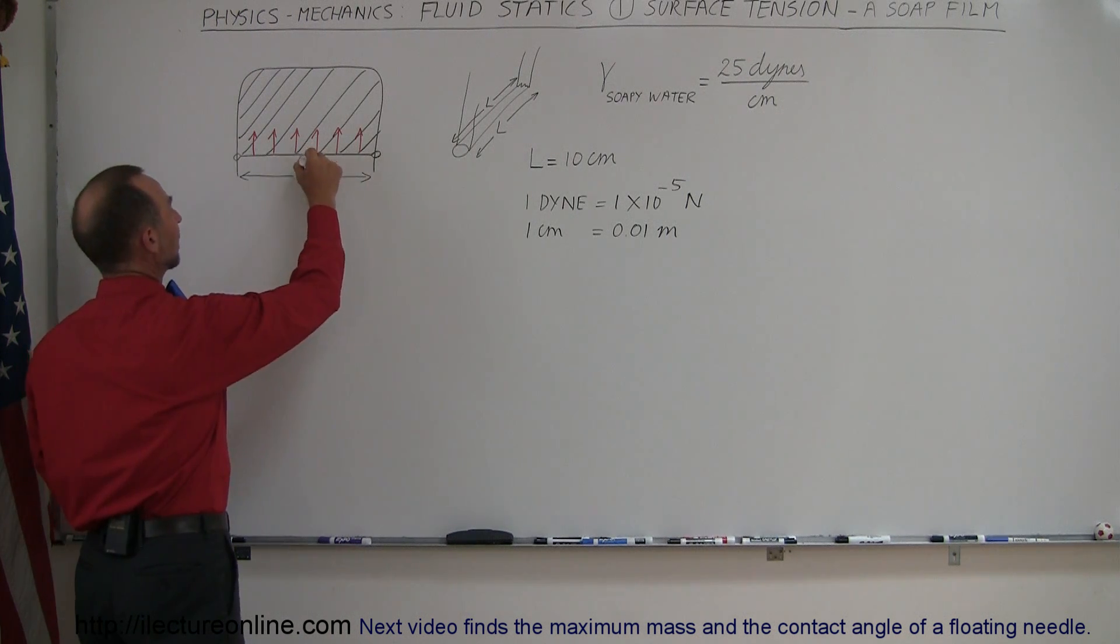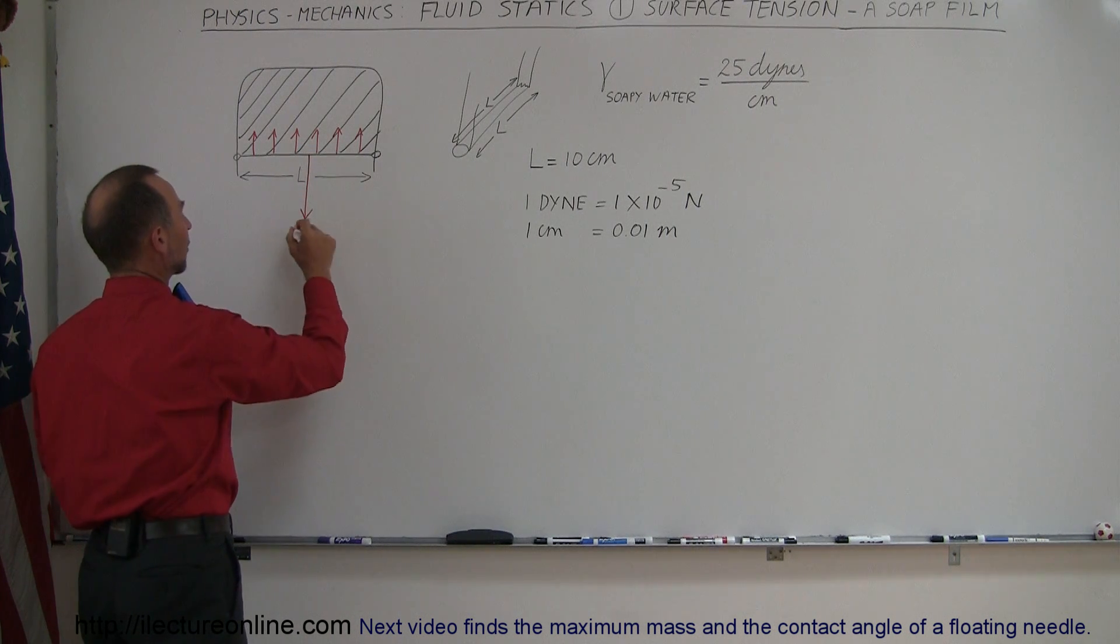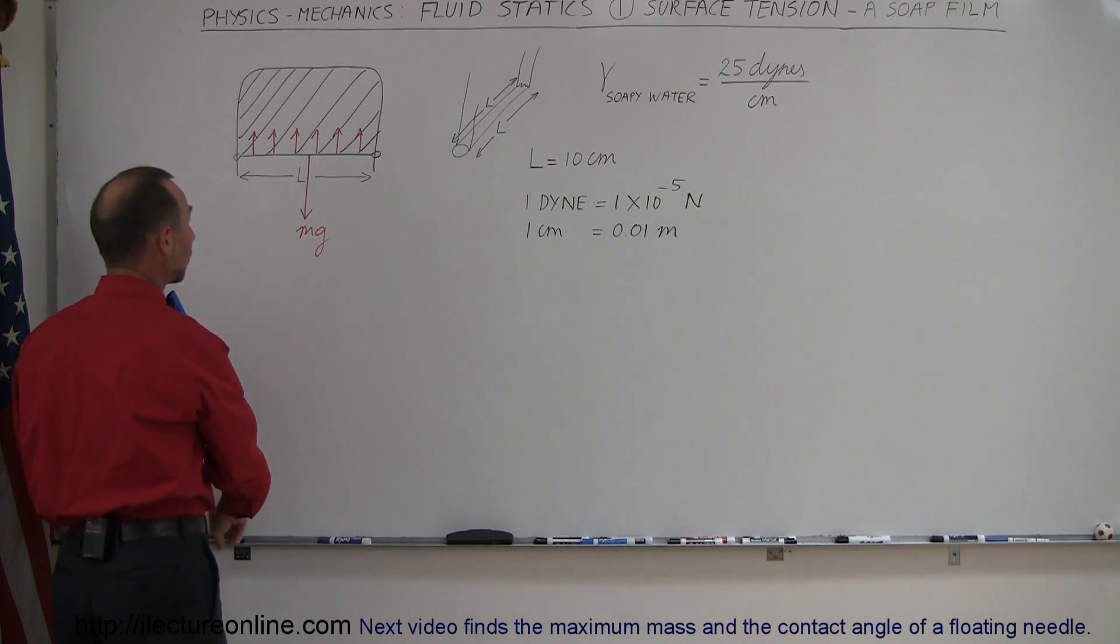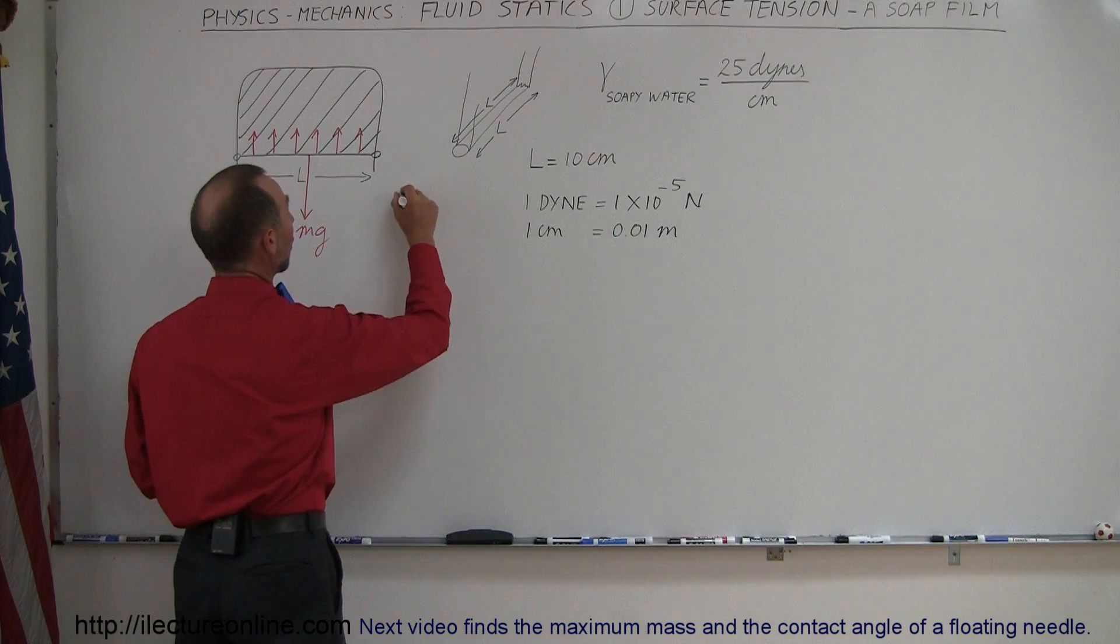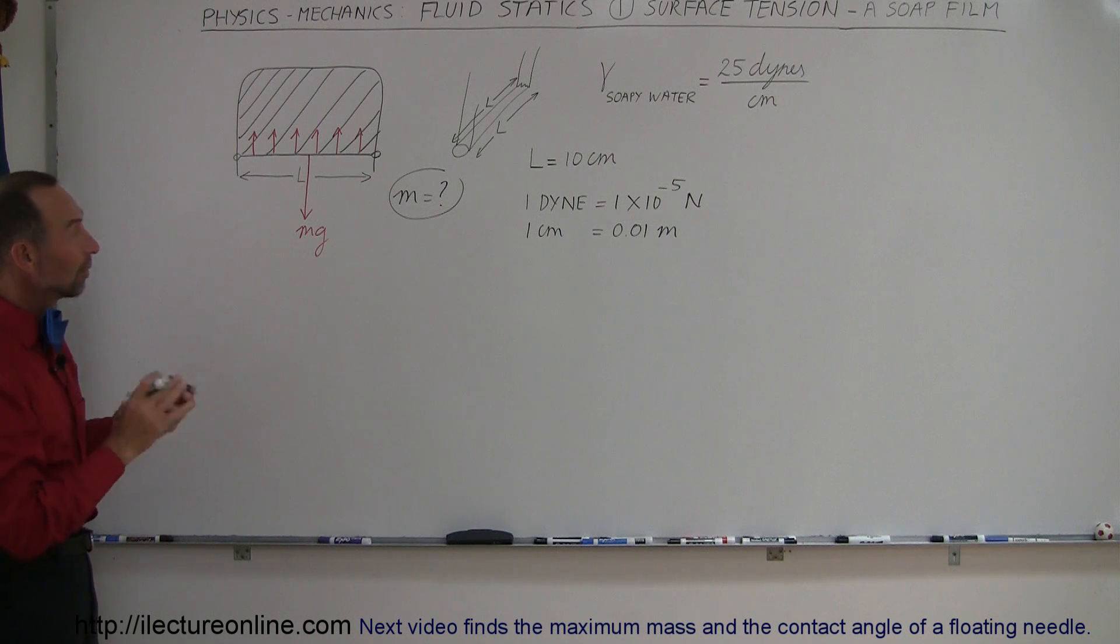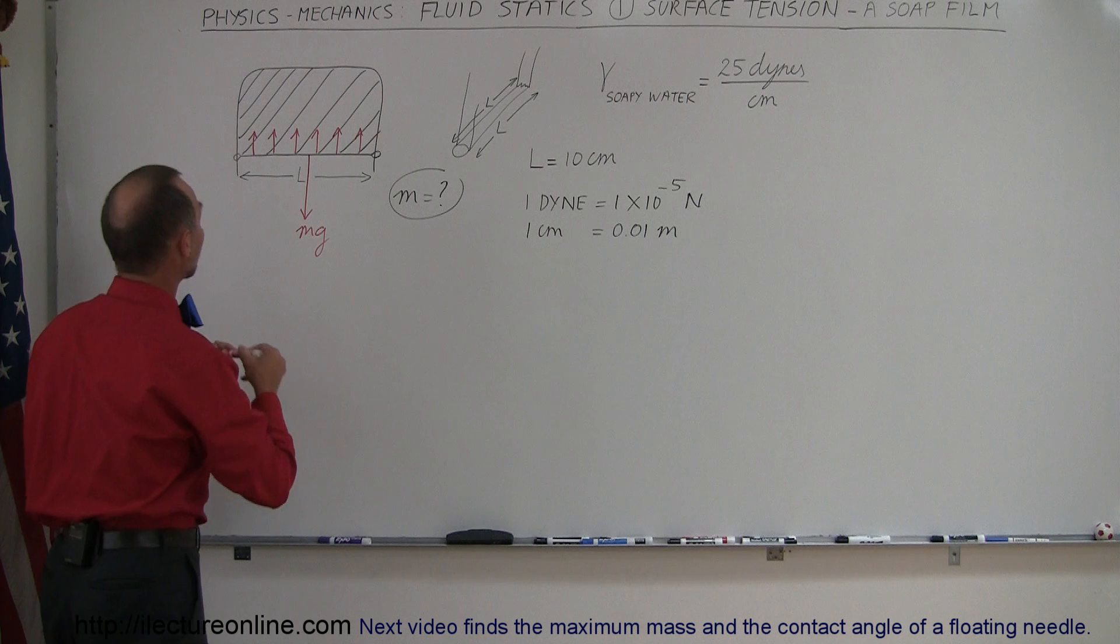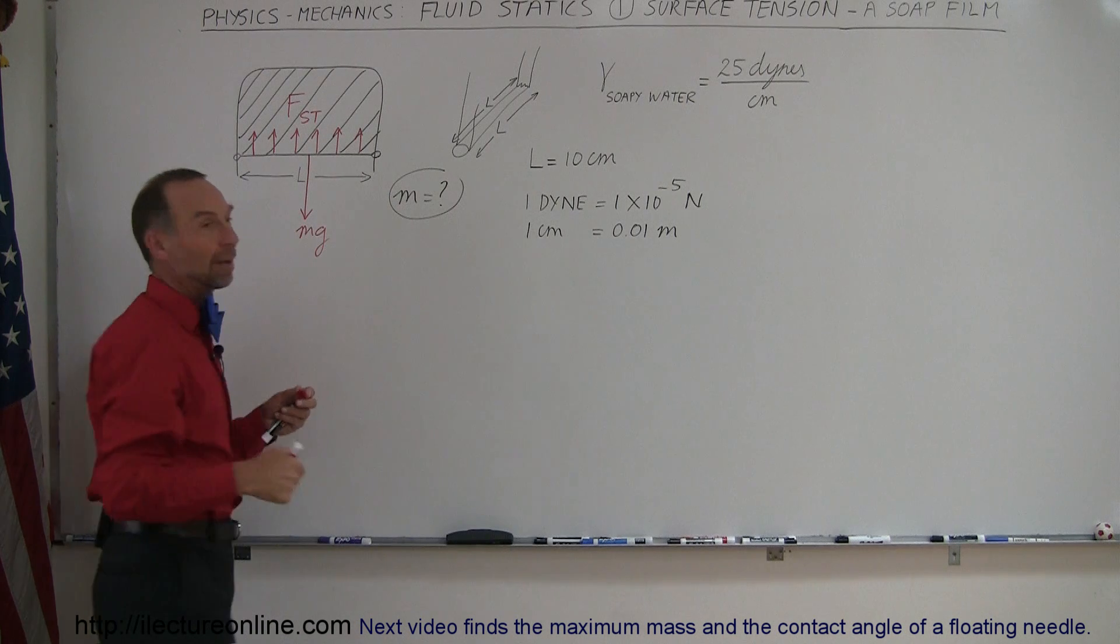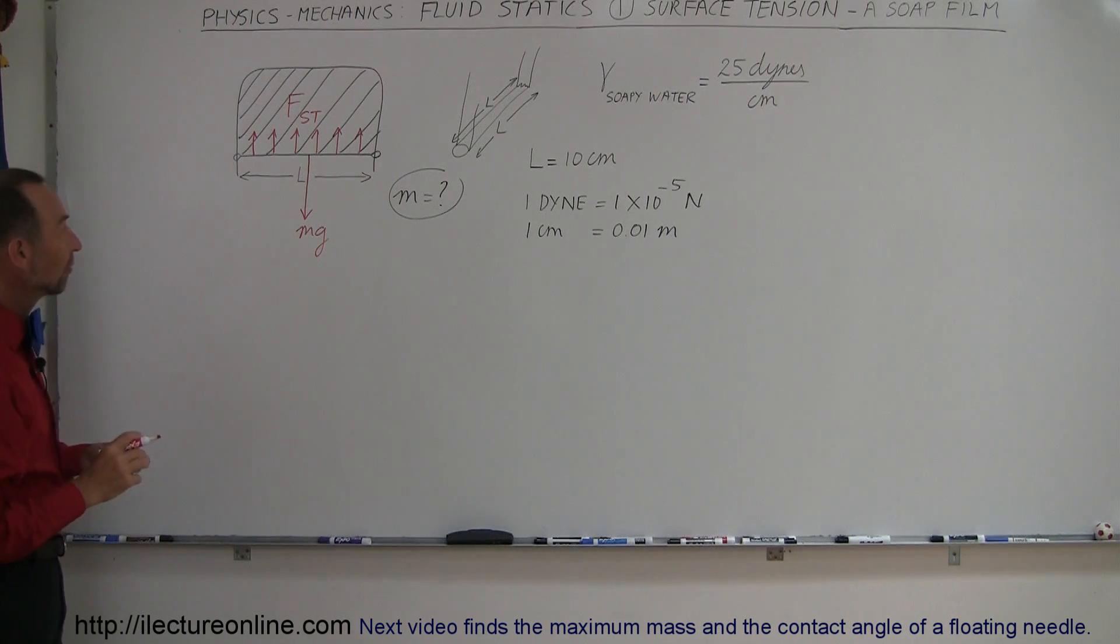So then assume that the force downward is caused by gravity which we'll call mg. Let's say that in this particular case we're trying to find out what the mass of this little wire is that's suspended from that soapy film and of course that will then be counterbalanced by the force upward which we call surface tension. So let's call this F the force of surface tension ST. Pulling upward we have the counterbalanced force for the weight of the wire.